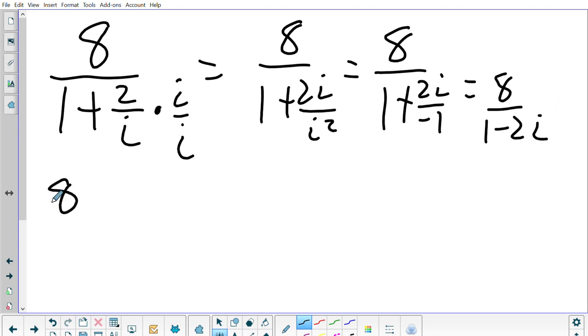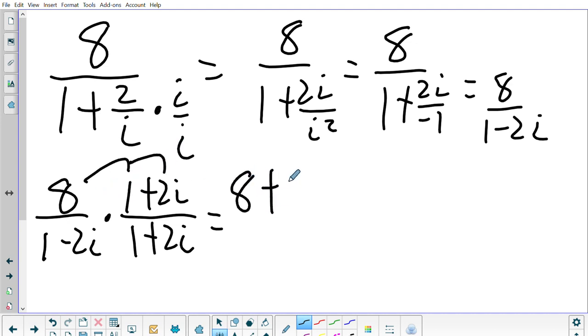So what I'm going to do is I'm going to multiply this by its conjugate which is 1 plus 2i over 1 plus 2i. When I do that I get 8 plus 16i.